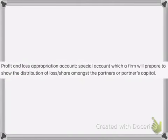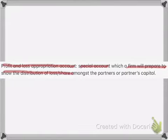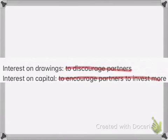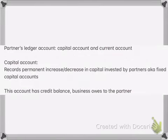A profit and loss appropriation account is a special account which a firm prepares to show the distribution of the profit or loss amongst the partners. Interest on drawings is charged to discourage the partners from taking out drawings, while interest on capital is credited to encourage the partners to invest more capital.